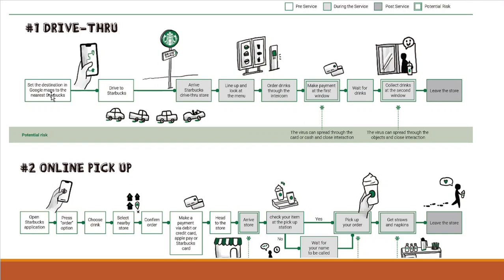In the drive-thru example: first, the customer sets the destination in Google Maps to the nearest Starbucks, then drives there. Upon arrival, the customer lines up and looks at the menu, orders drinks through the intercom, then makes payment at the first window — where the virus can spread through cash or close interaction. The customer then waits for the drinks and collects them at the second window, where the virus can spread through objects and close interaction. Finally, the customer leaves the store.